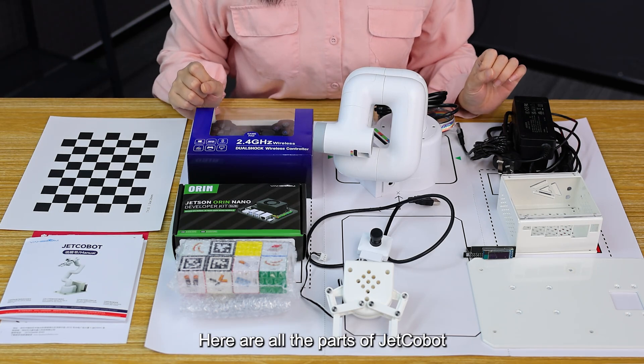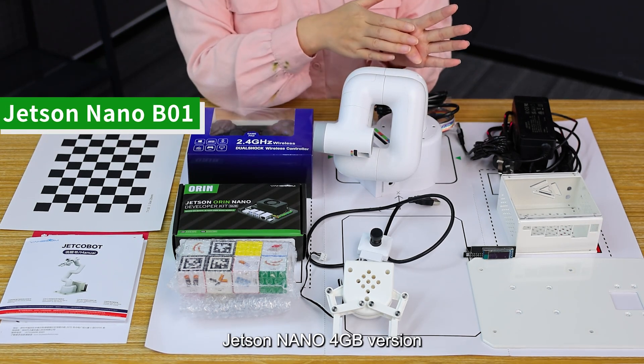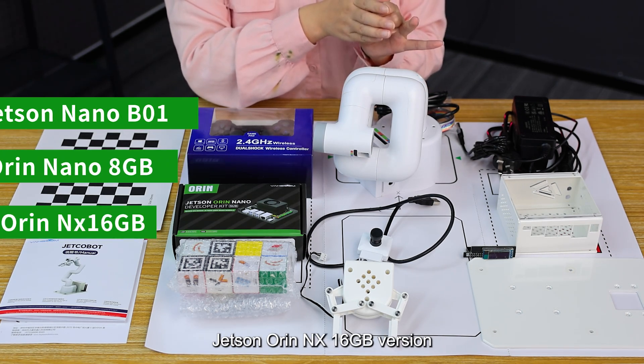Here are all the parts of JetCobot. There are 3 configurations for choice: Jetson Nano 4GB version, Jetson Orin Nano 8GB version, and Jetson Orin NX 16GB version.